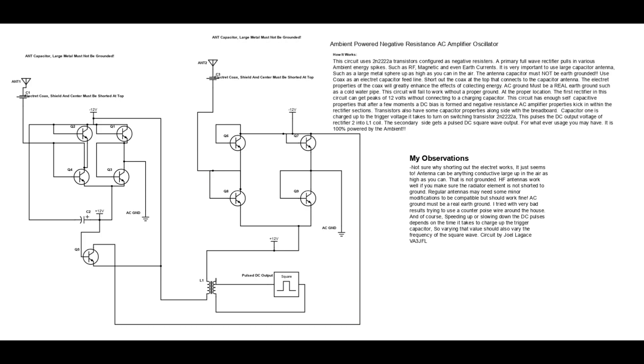It is very important to use a large capacitor antenna, such as a large metal sphere, up as high as you can in the air. The antenna capacitor must not be earth grounded. Use coax as an electric capacitor feed line. Short out the coax at the top that connects to the capacitor antenna. The electric properties of the coax will greatly enhance the effect of collecting energy.